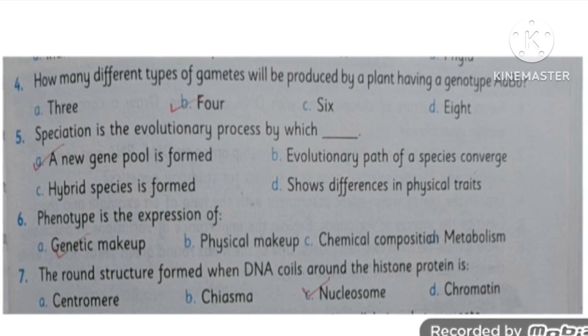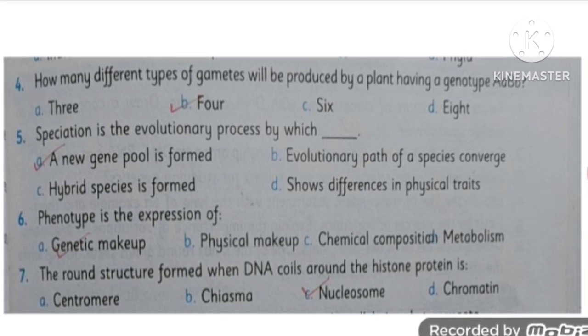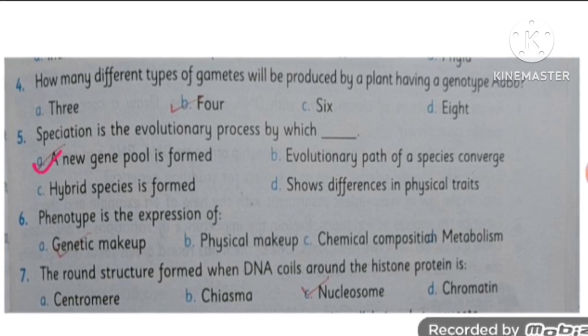Speciation is the evolutionary process by which new species are going to form. So basically a new gene pool is going to be formed.